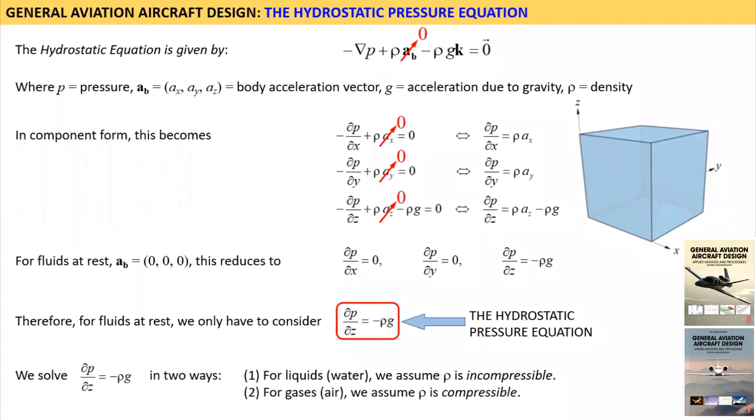Two, for gases such as air, we treat rho as compressible. This means rho is a variable.